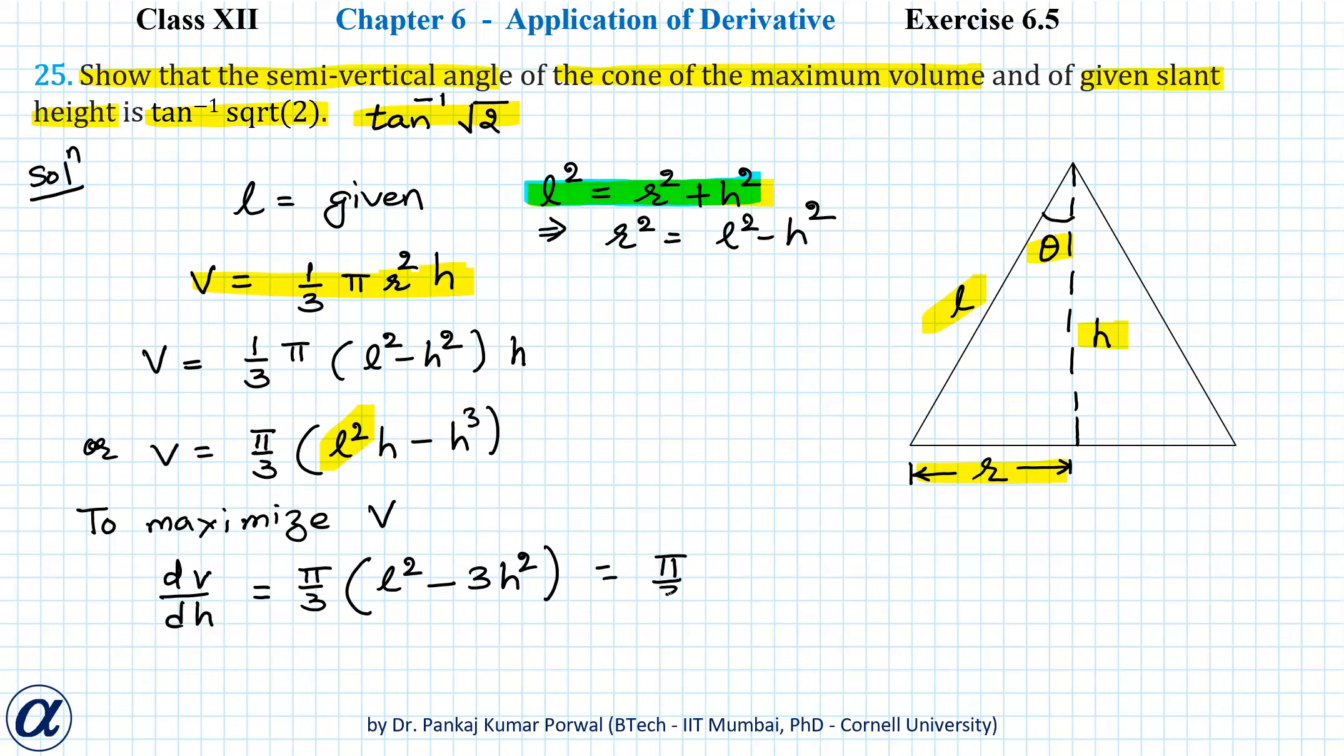That equals π by 3 times (r squared minus 2h squared). Setting that equal to 0 gives me r squared minus 2h squared equals 0, so r squared equals 2h squared, or r equals root 2h. Note that I have ignored the negative solution.